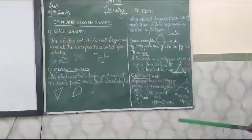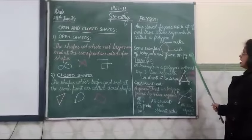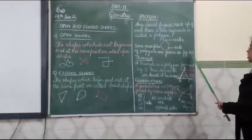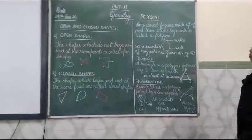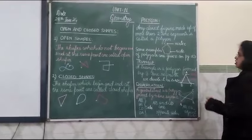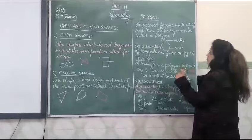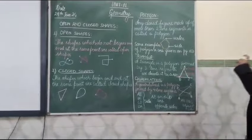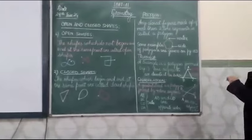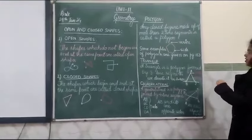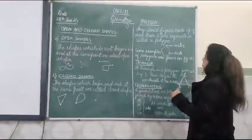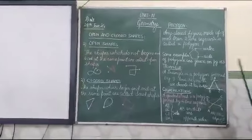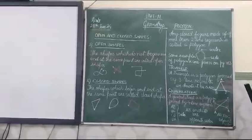You can check this — some examples of polygons are given on page number 183. Students, what you have to do: you have to draw all the figures made up of three line segments, four line segments, five, and likewise all the types of polygons given on page number 183 in your maths notebook.